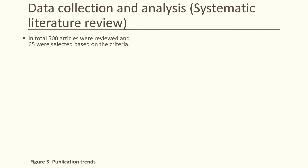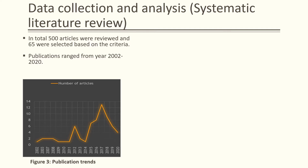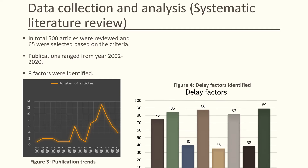One of the methods used for data collection is the systematic literature review. During the systematic literature review, approximately 500 international articles were reviewed, but only 65 articles were selected based on the literature quality criteria. Figure 3 presents the publication trend on the research topic ranging from 2002 to 2020. It was noticed that researchers are more inclined toward this research topic in the current decade compared to the previous decade. Based on the systematic literature review, eight common themes were identified: design error, labor shortage, equipment shortage, events, weather, geotechnical error, breakdown, and material shortage, as shown in Figure 4.